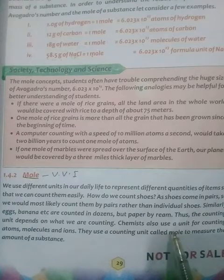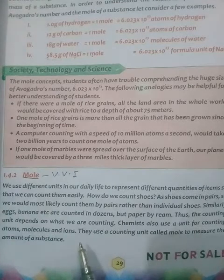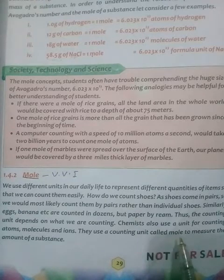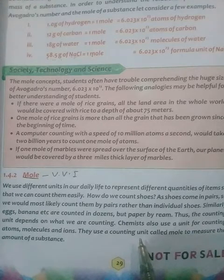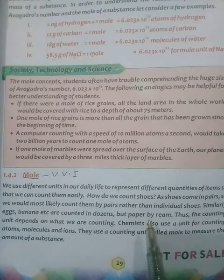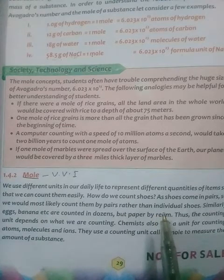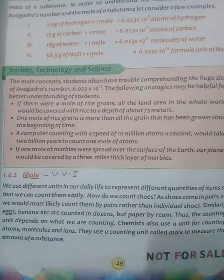Chemists also use a unit for counting atoms, molecules and ions. Scientists use a counting unit called mole to measure the amount of a substance. One mole of a substance contains Avogadro's number of particles. These particles may be atoms, molecules or ions, and the numerical value is equal to 6.023 × 10²³.